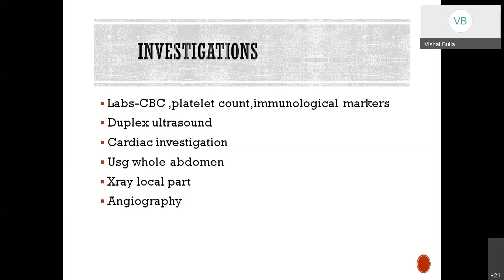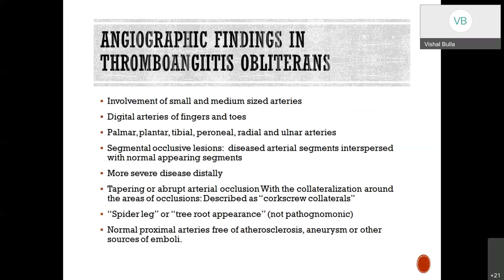Cardiac investigation is used to rule out a proximal source of emboli to the extremity. Ultrasound abdomen rules out proximal sources from abdominal aortic aneurysms or atherosclerotic aorta. X-ray of the local part is done for ischemic ulceration to exclude osteomyelitis. Angiography findings may be suggestive of TAO but not always pathognomonic. These findings include: involvement of small and medium sized arteries; digital arteries of fingers and toes mostly involved; segmental occlusion with diseased segments interspersed with normal appearing segments; more severe disease distally; tapering or abrupt arterial occlusion with collateralization described as corkscrew collaterals with a spider leg or tree root appearance; and normal proximal arteries free of atherosclerosis, aneurysm, or other sources of emboli.